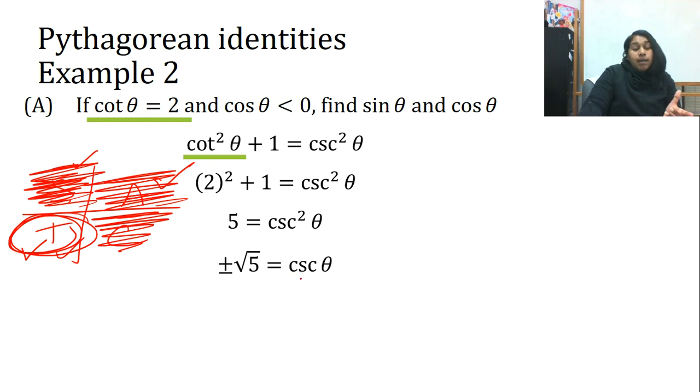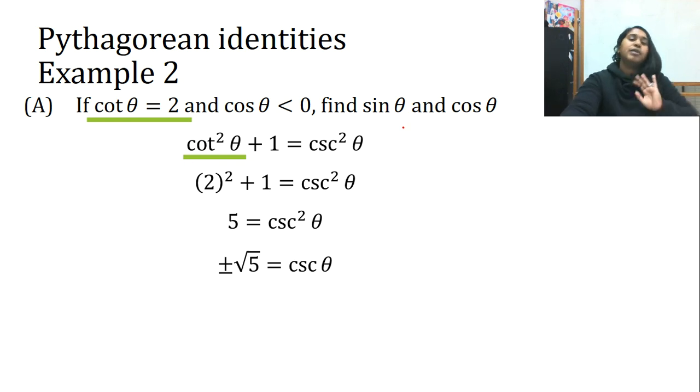Well, cosecant better be negative in quadrant 3. So, my answer actually isn't plus or minus. It's simply going to be minus. But again, we're not solving cosecant. We're solving sine. So, we also have to flip it. So, let me show you my answer now.